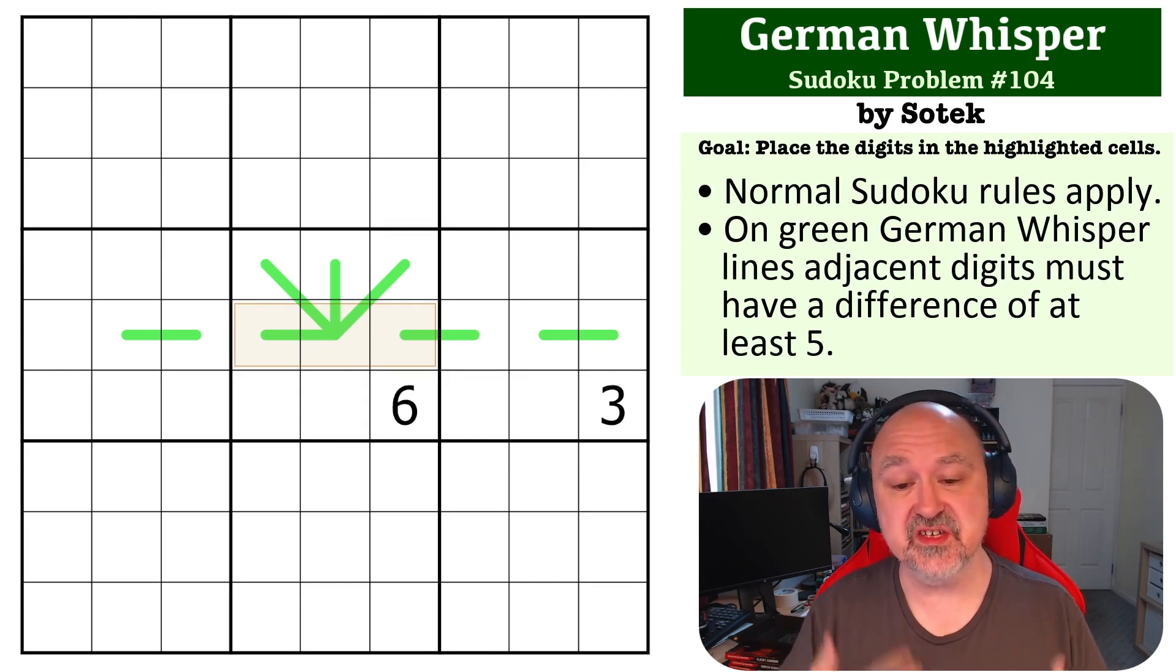The way German whisper lines work is adjacent digits on German whisper lines have to have a difference of at least five. So feel free to grab a copy of the link below and give this one a try.